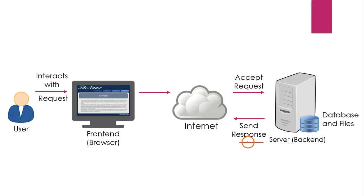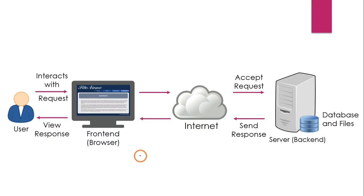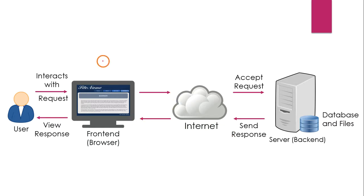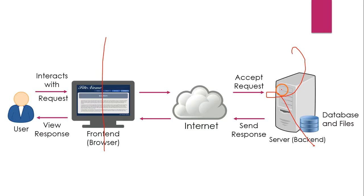The server sends back a response, which can be in any format. The response goes through the internet and reaches the browser, and the browser shows it to the user. This is the general web application architecture. People talk about tiers — two-tier, three-tier, four-tier architecture. What you see here is a two-tier architecture: tier one is the client system and tier two is the server system.